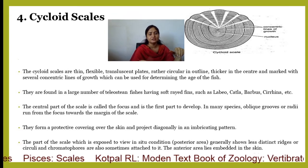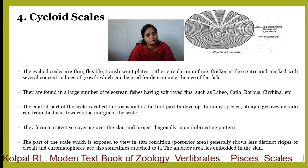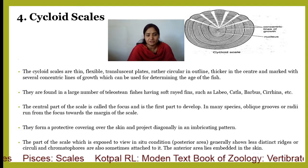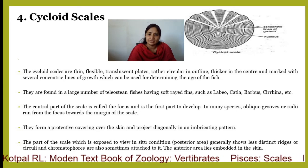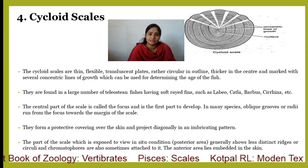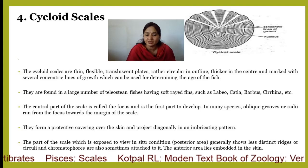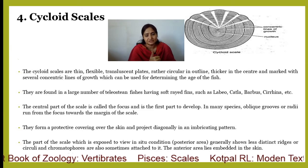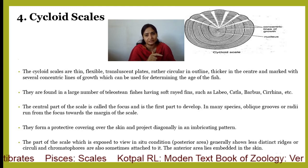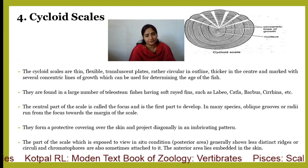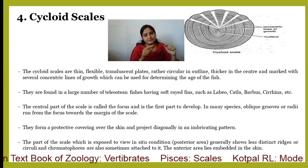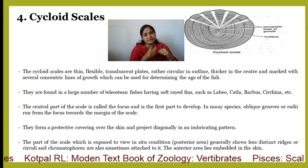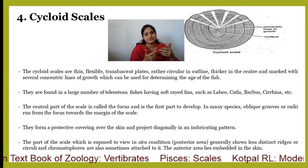When you study labeo, you have to learn that cycloid scales are present. Cycloid scales are thin, flexible, transparent plates, rather circular in outline, thicker in the center, and marked with several concentric lines of growth which can be used to determine the age of fishes. The cycloid scale has a nucleus-like structure at the center. Concentric layers and concentric ridges are present, and radial lines are also seen. These concentric rings represent the age of an individual fish, so we can determine a fish's age through its scales.